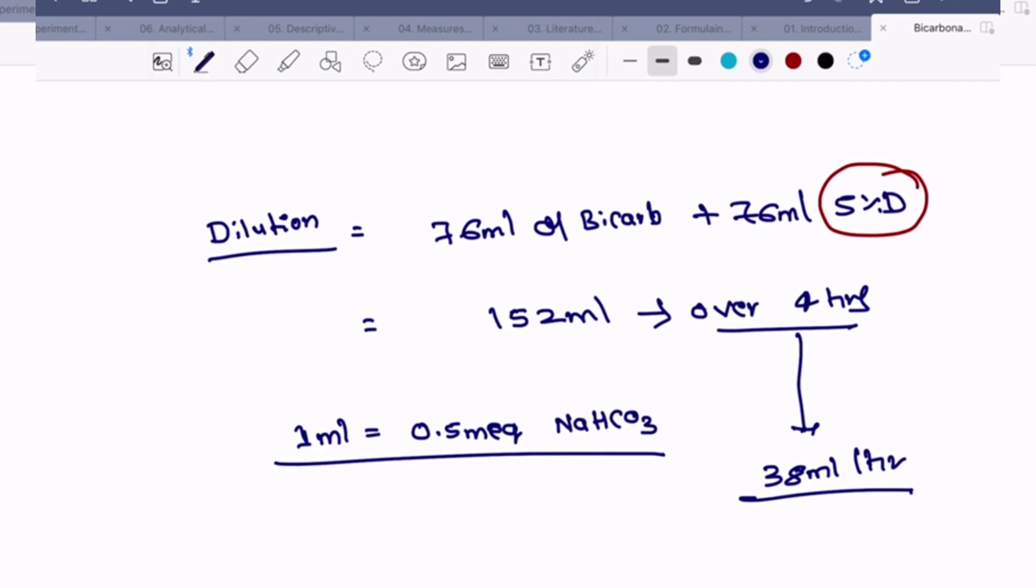This will give 1 ml of this dilution equal to 0.5 milliequivalents of soda bicarb.